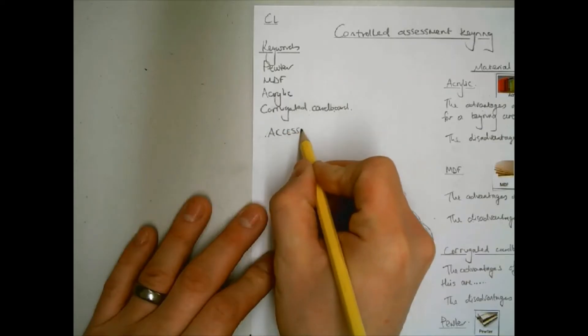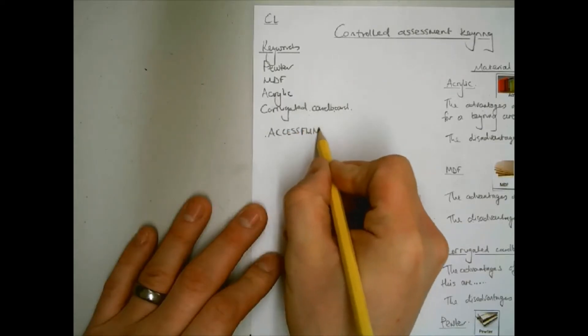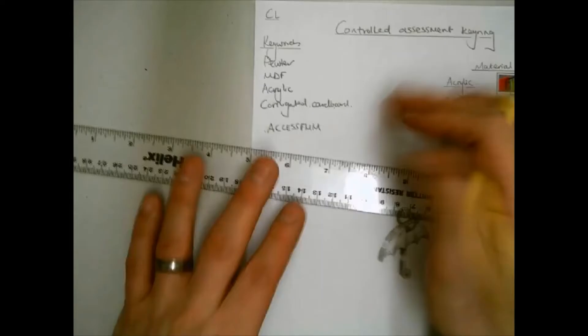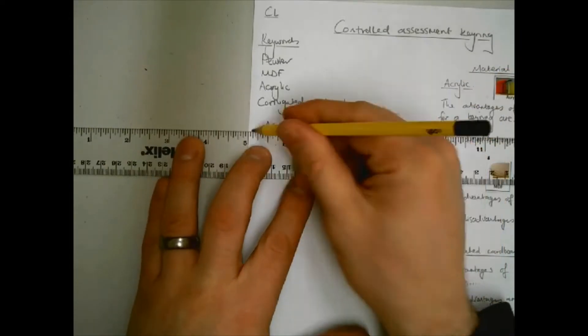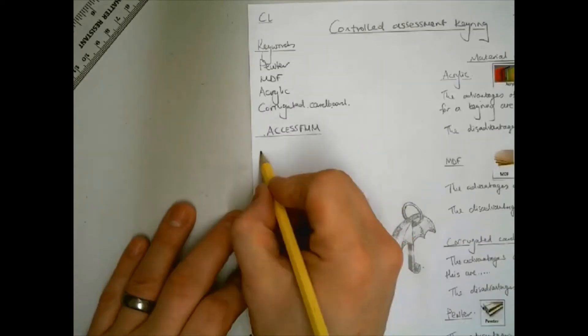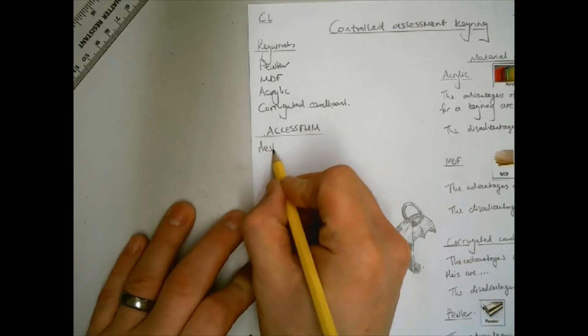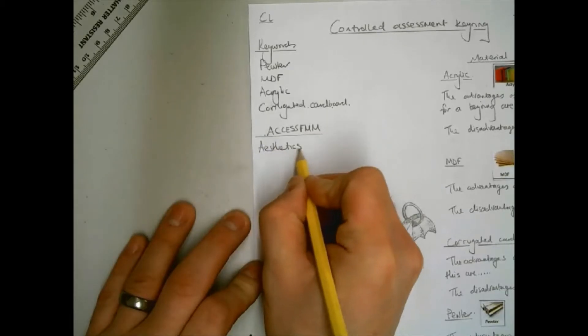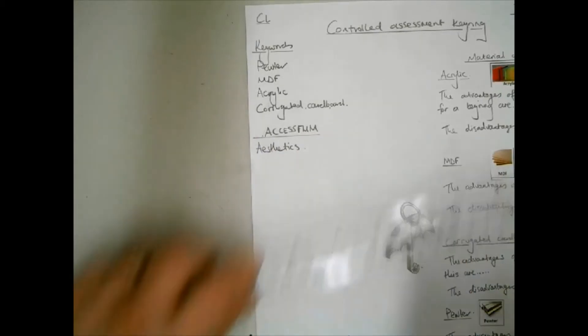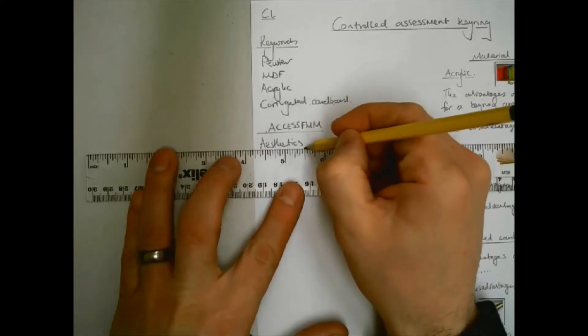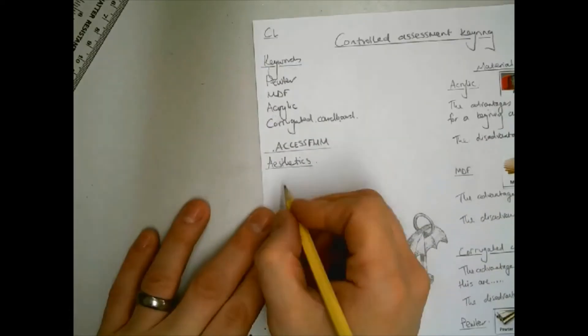Aesthetics relates to the human senses, for example, sight, touch, hear, smell, and taste. In the case of a keyring, the aesthetics to consider are sight and maybe touch. You might consider the colour you painted, if the shape of the design works well, or what details have been added to grab people's attention.